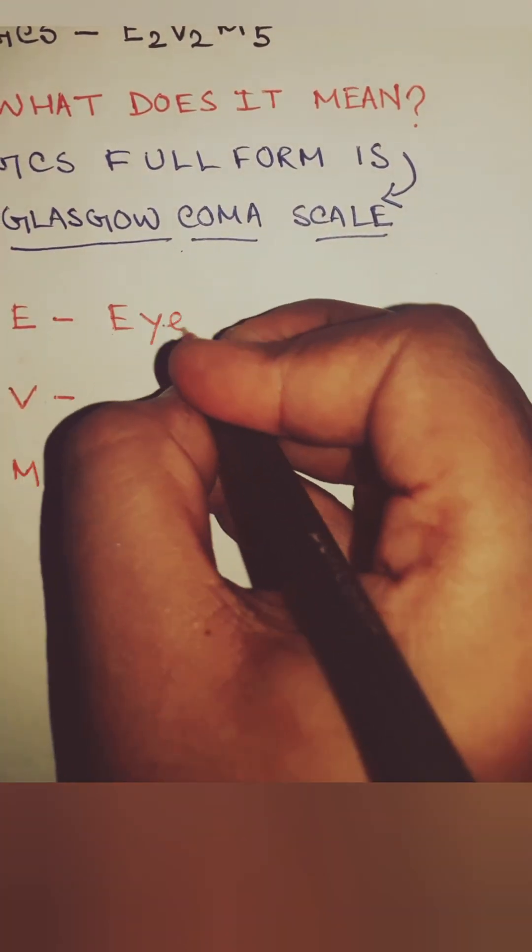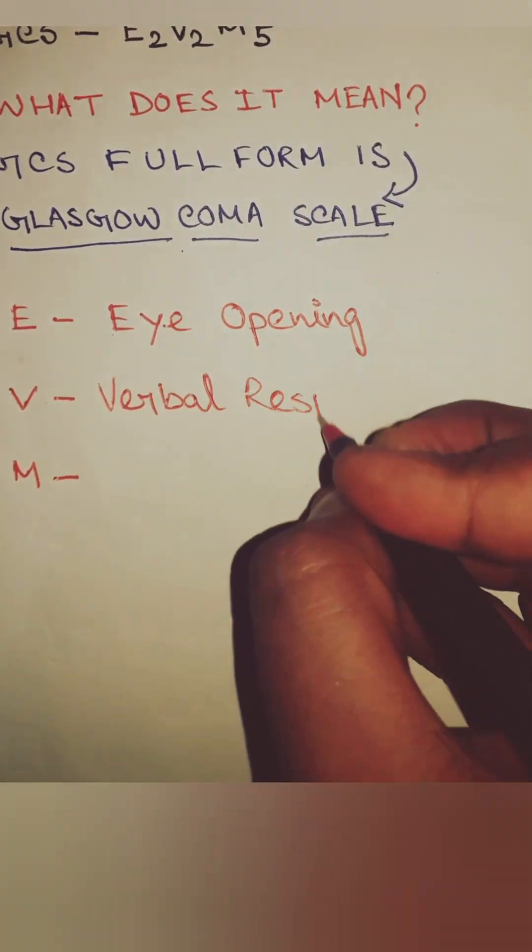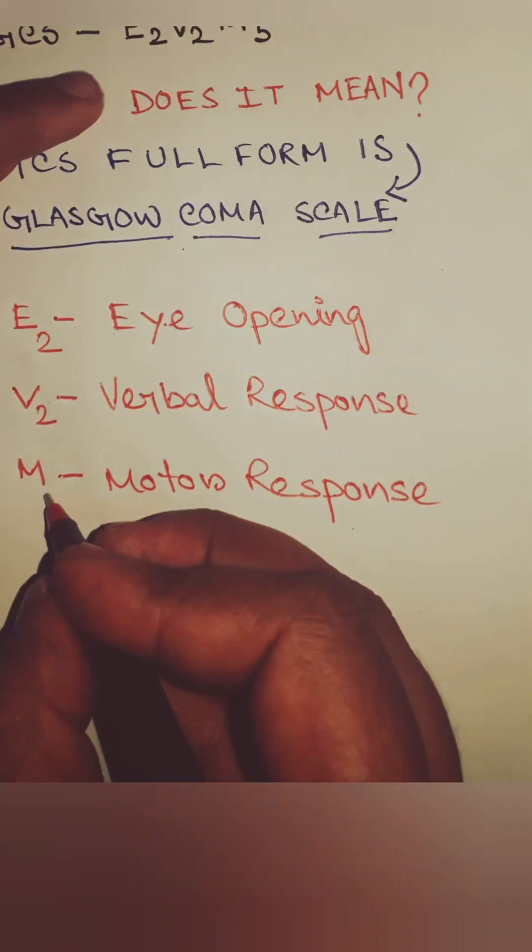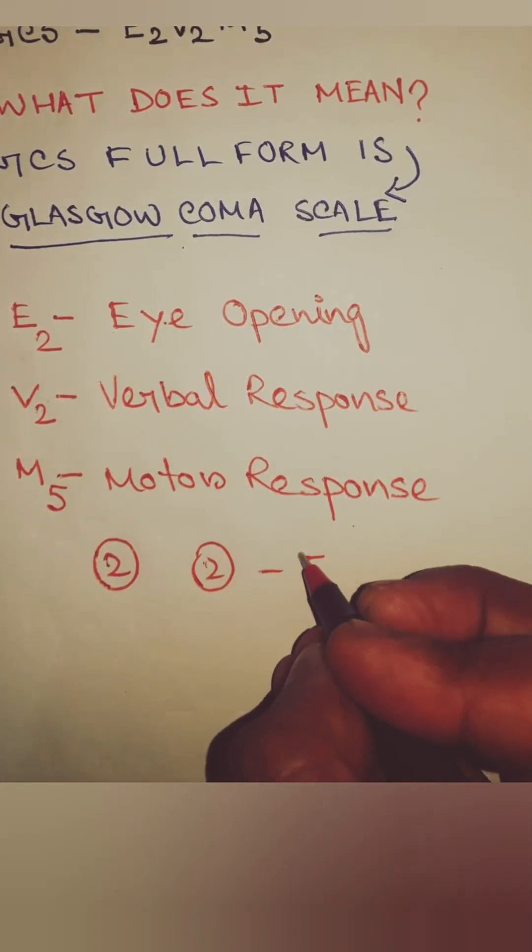E stands for eye-opening, V for verbal response, and M for motor response. Total score we will count as 2 plus 2 plus 5, that is 9.